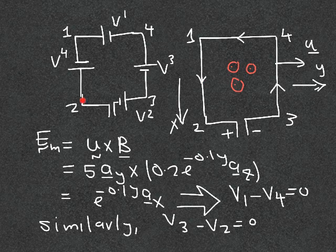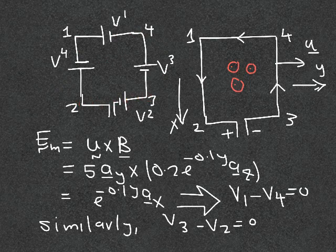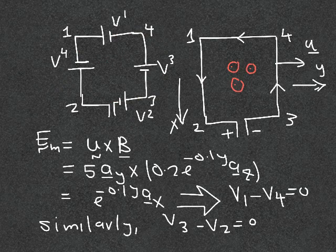We label the corners as points 1, 2, 3, and 4. So the battery voltages are: V2 minus V1, V4 minus V3, V1 minus V4, and V3 minus V2. We then calculate the induced equivalent electric field E_m for each one. The expression is the same form for all of them — it's u × B — where u is the same but B will be different for each wire.